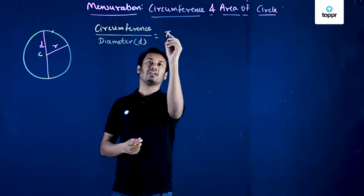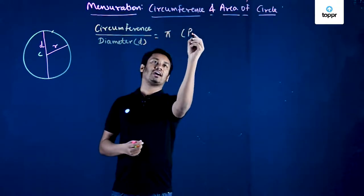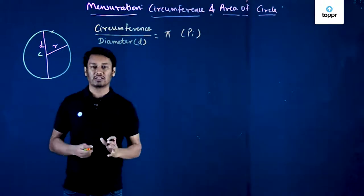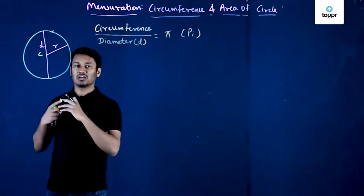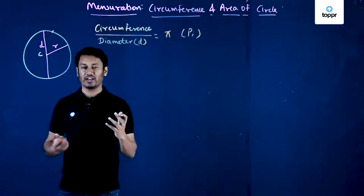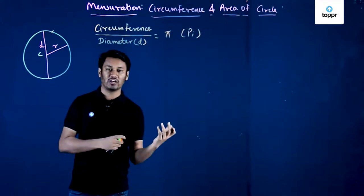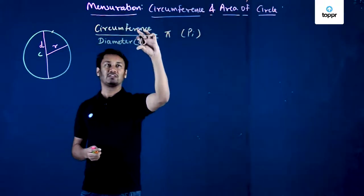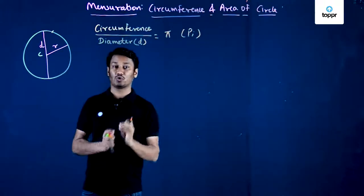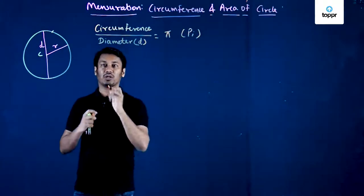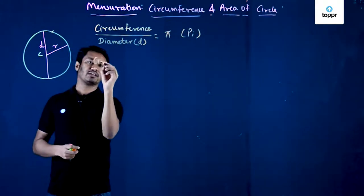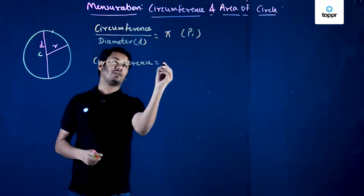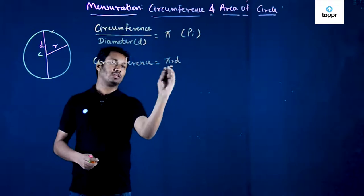Pi is written using a Greek letter and is read as pi. This pi is a constant — meaning you consider any circle of any radius, a very small circle or a very large circle, if you measure its circumference and diameter and take the ratio, it will always come out to be this constant value pi. So I can represent circumference of a circle as pi times d.